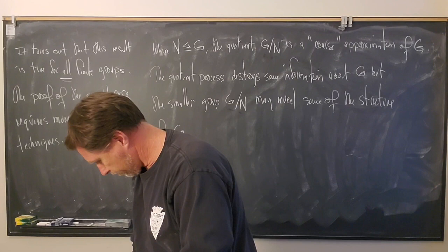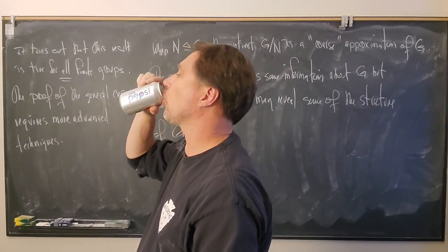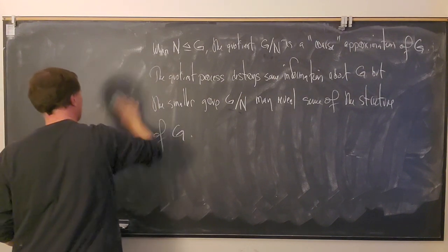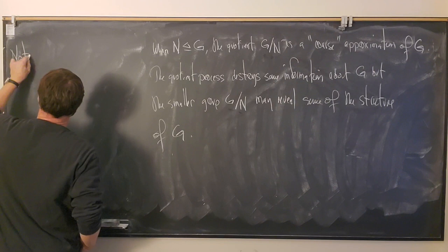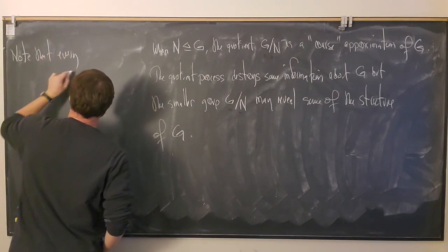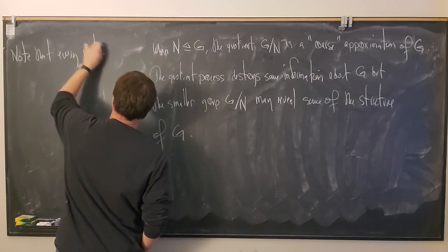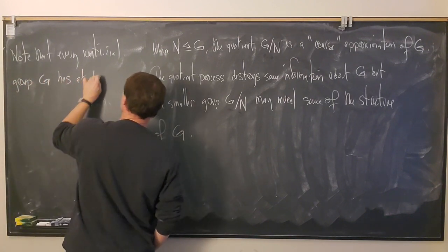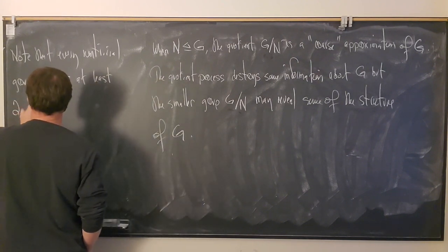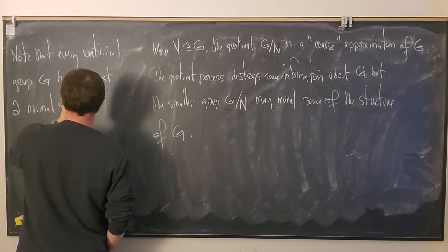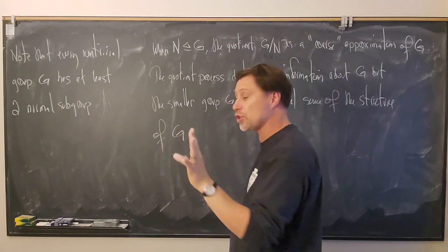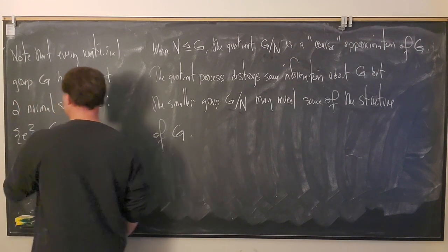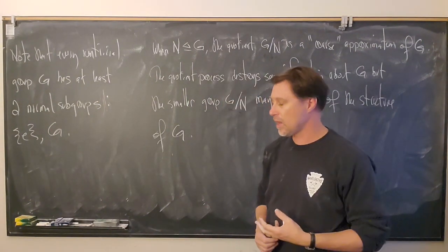Note that every non-trivial group G has at least two normal subgroups, guaranteed. Those are the trivial subgroup and G itself. So those two subgroups are guaranteed to be normal subgroups, and the group may have more.